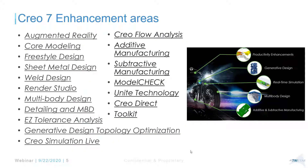Here's a quick overview of the different enhancement areas PTC addressed in CREO 7 compared to CREO 6: augmented reality (AR, which has been there since CREO 4 and 5), core modeling, surfacing, sheet metal design, and weld design. There are also exciting new technologies like generative design, AI-based generative design, ANSYS-based CREO Simulation Live with fluids, and others. All these improvements are documented in the PTC help file.